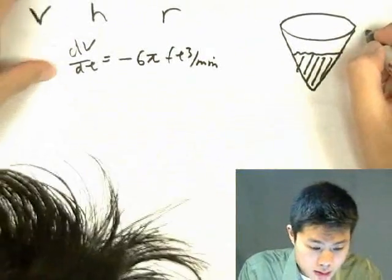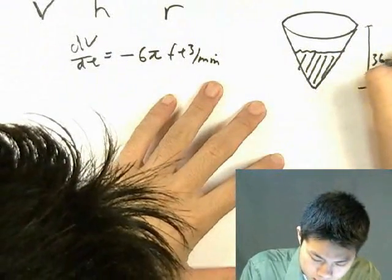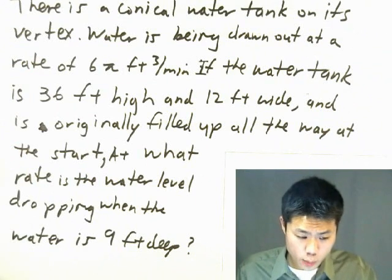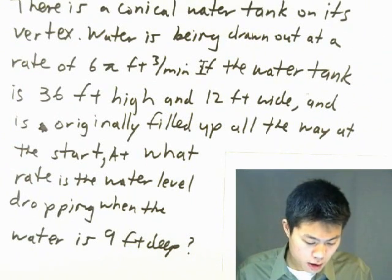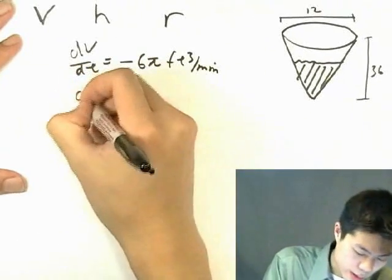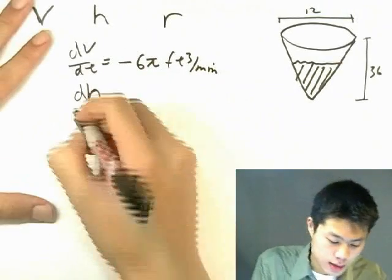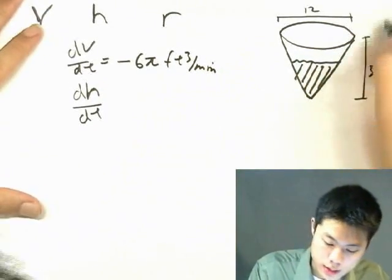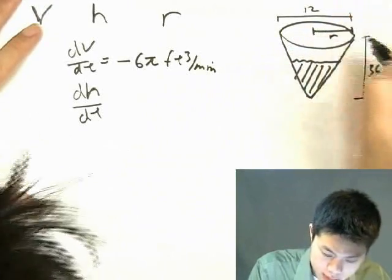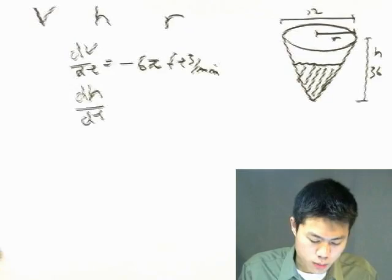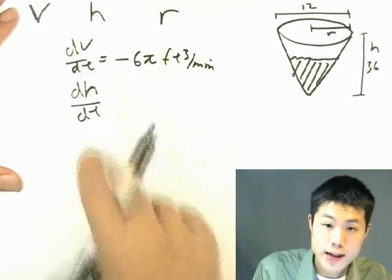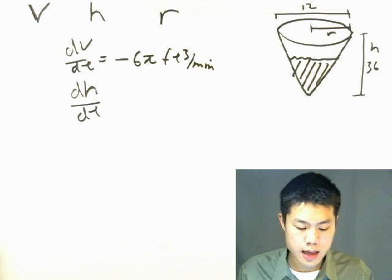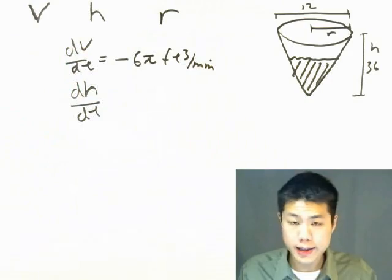We have, what is it? We have volume, we have height, and we have radius. Okay, so we have volume, we have height, and we have radius. Okay, what are we told? Well, we're told that, dV over dt is equal to is being drawn out. Now, careful here. If water is being drawn out of the water tank, that means that the amount of water in the water tank is shrinking. So it's negative. So the rate here is negative, right? It's negative six pi cubic feet per minute.